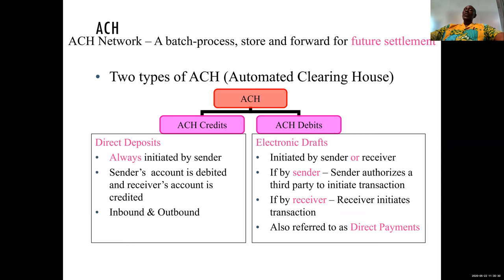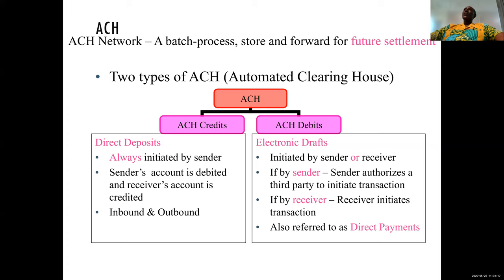ACH credit is always initiated by the sender. If I want to make payments to a group of suppliers or to my staff, I make the request to the bank and the bank processes it — that's what we call the ACH credit. You can do inbound or outbound transactions: inbound meaning receiving payments, outbound meaning sending payments. The sender's account is debited and the receiver's account is credited — that's the basic rule.